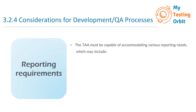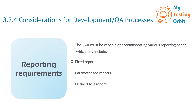Next we have reporting requirements. The TAA must be capable of accommodating various reporting needs which may include fixed reports — predefined reports that offer consistent standardized information. Next we have parameterized reports, which allow you to customize reports based on specific criteria or filters. This flexibility is particularly valuable when you need tailored insights. Lastly, defined reports are structured reports that present test results in a specific format, ensuring results are presented consistently and comprehensively.